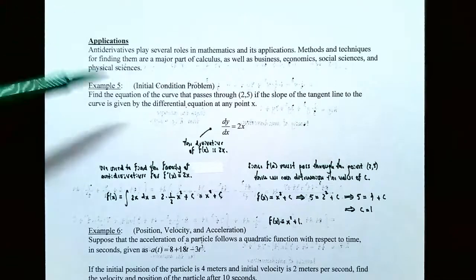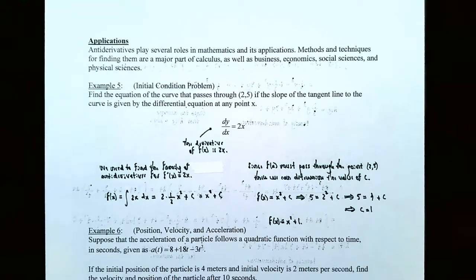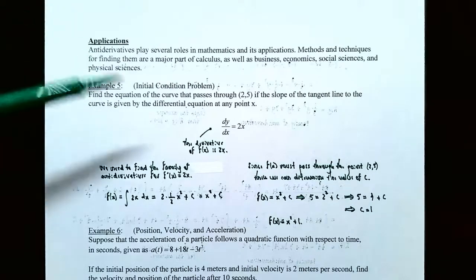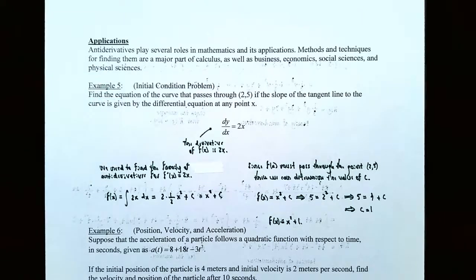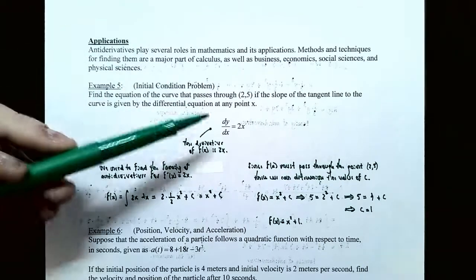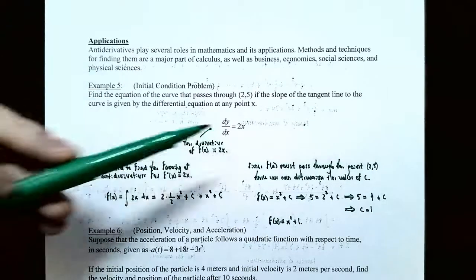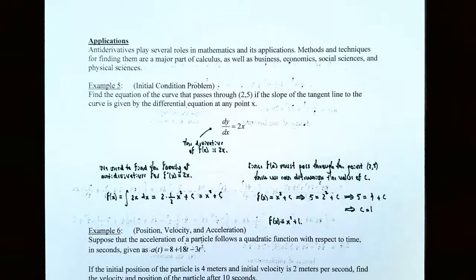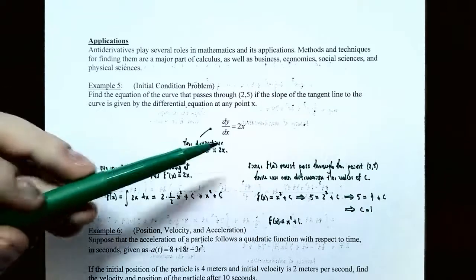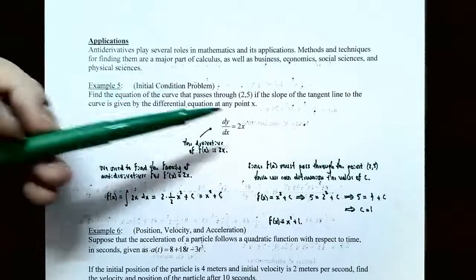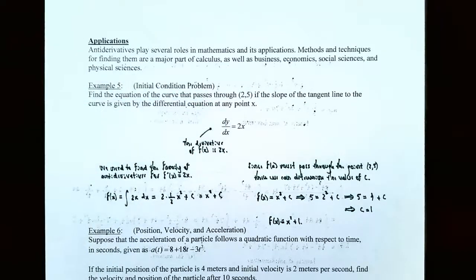Example 5 is what's called an initial condition problem. Find the equation of the curve that passes through (2, 5) if the slope of the tangent line to the curve is given by the differential equation dy/dx at a point x. So dy/dx, that's representing a derivative — the derivative is 2x. So what this problem is saying is: find the function's formula so that the derivative is 2x and the function will pass through (2, 5) on its graph.